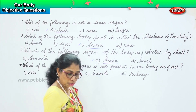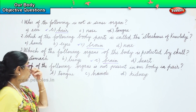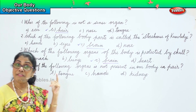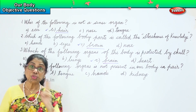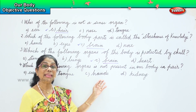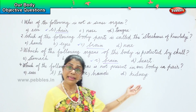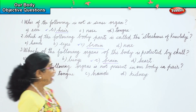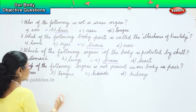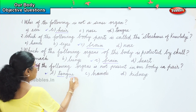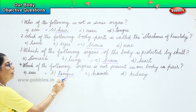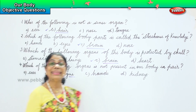Pair means two. So which part is not a pair? Ears — do we have ears in a pair? Yes, we have two ears. Hands — are they in a pair? Yes, we have two hands. Kidneys — yes, we have two kidneys. So hands, kidneys, and ears are all present in pairs. So which is not? Tongue. We have one tongue. Tongue is the organ not present in our body in a pair.